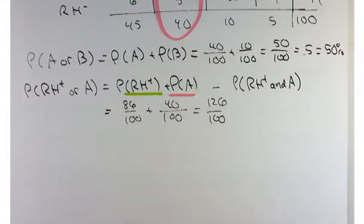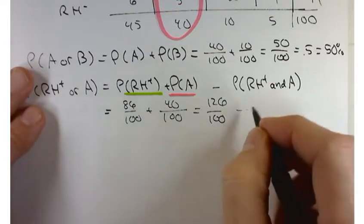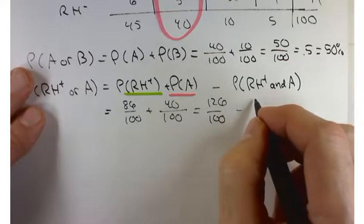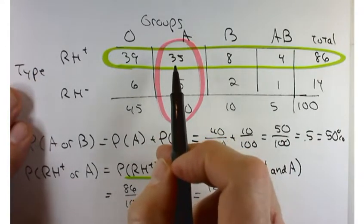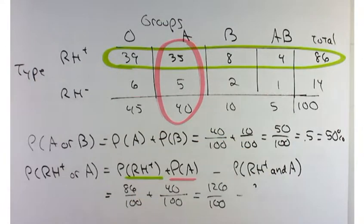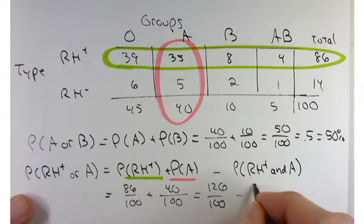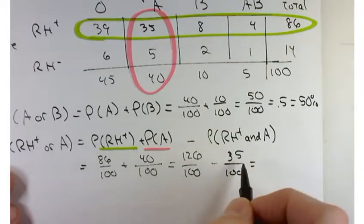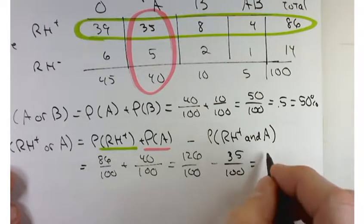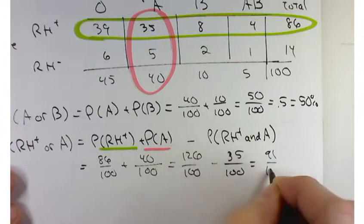So how many people are in that group that are Rh positive? Yeah, the intersection would be 35. So that now if we calculate this, calculate the difference, we get something that does make sense. It's 91 over 100.